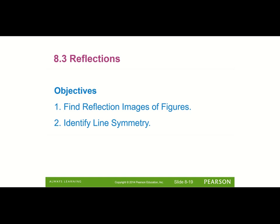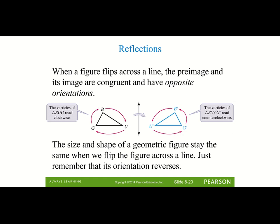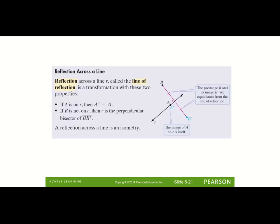Our next section is 8-3, and we're going to cover reflections. A reflection is when a figure flips across a line — the figure will not change shape or size, but the two figures will be mirror images with opposite orientations. When you have a reflection, you always have a reflection line — think of it as a mirror. Looking at B and B prime reflected over line R, B is the exact same distance from line R as B prime. If point A is on the line, its reflection is still on that line — it's the same point.